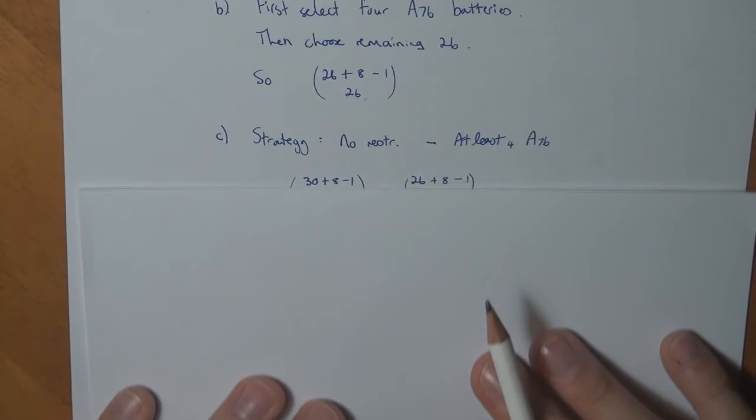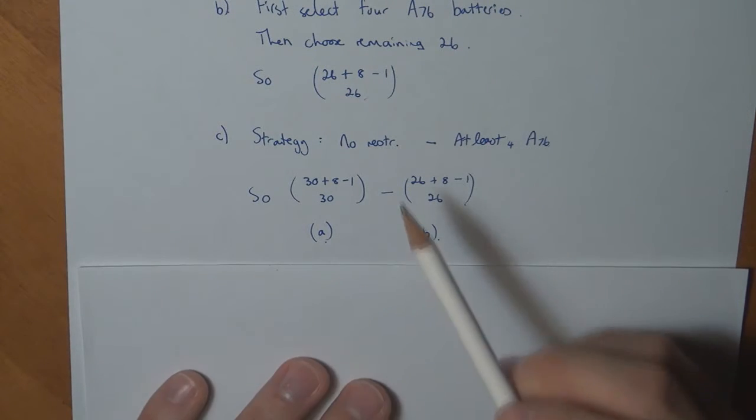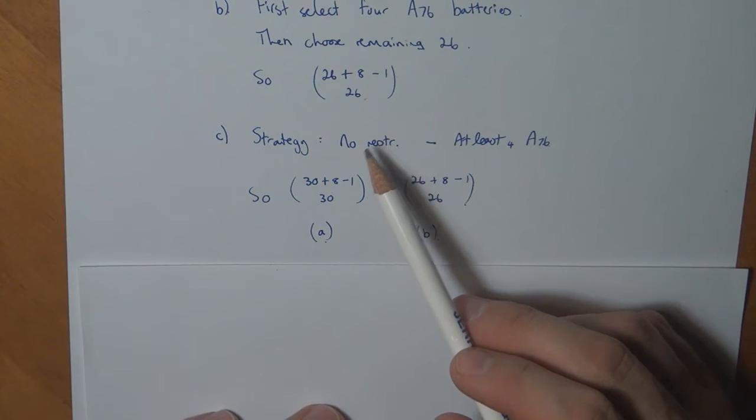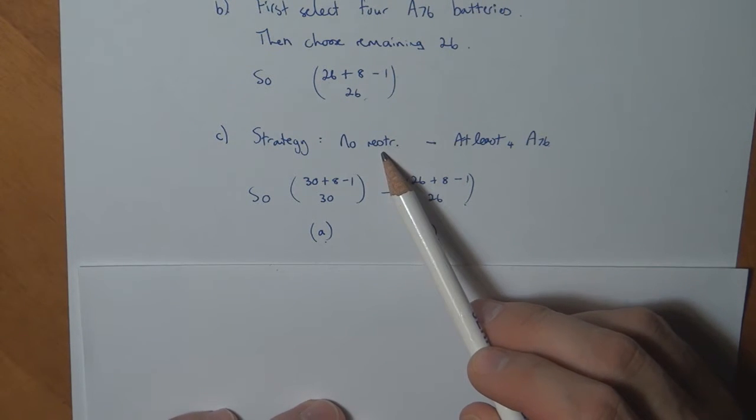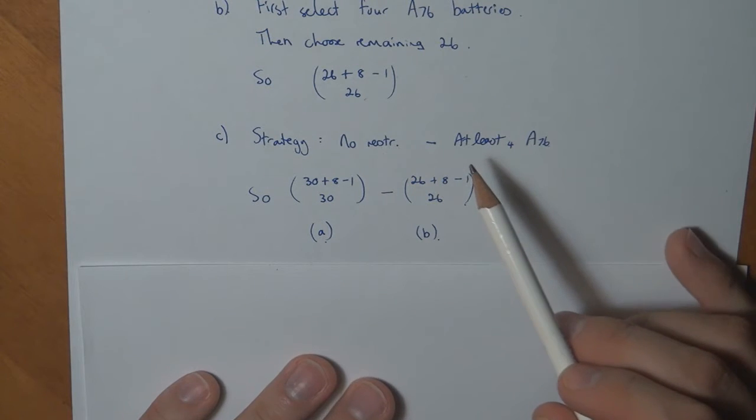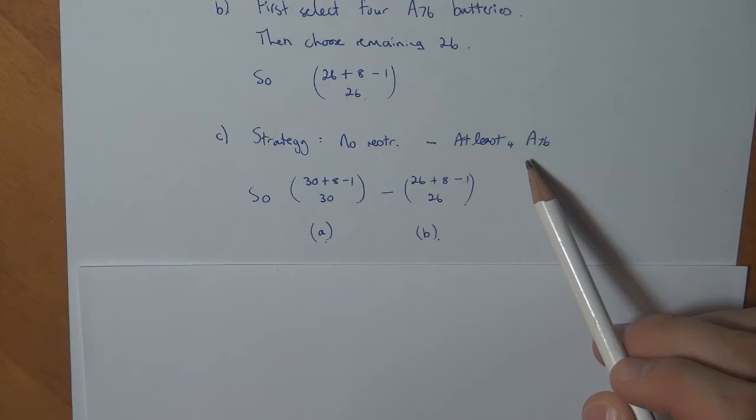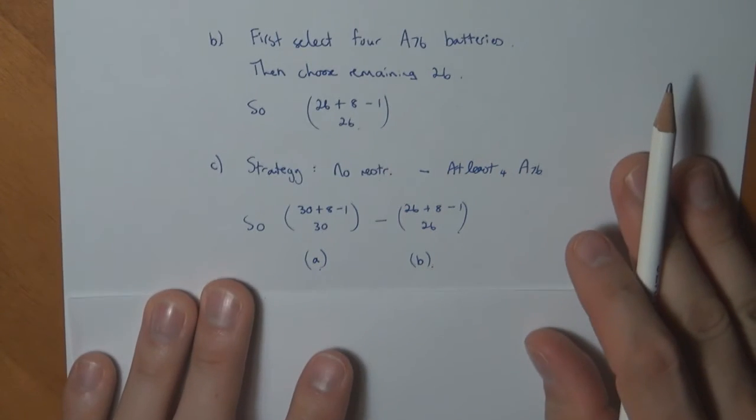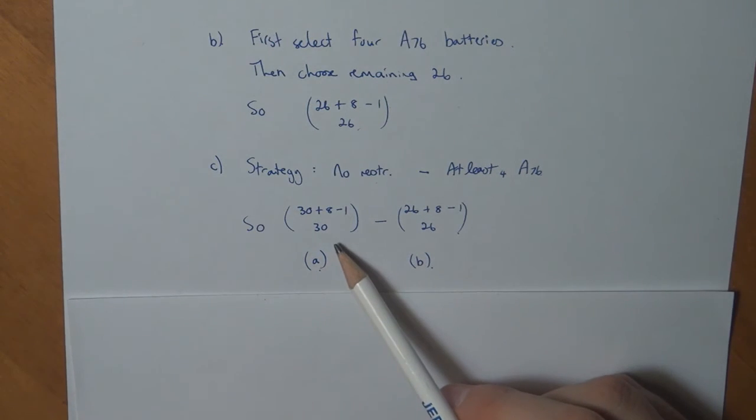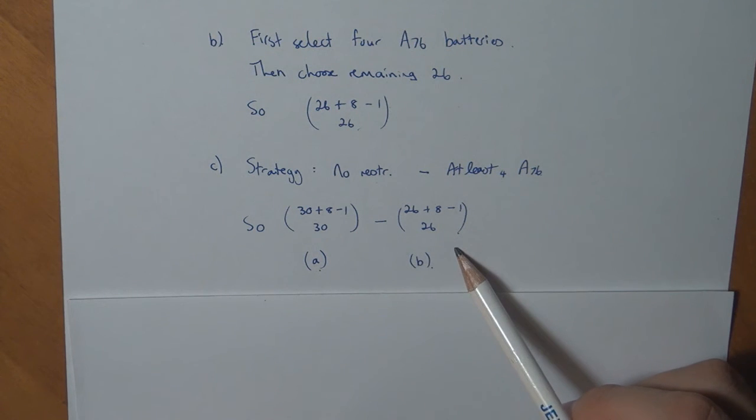In Part C, my strategy is very similar to the previous worked examples, where I take the no restriction case and subtract the situation where at least four A76 batteries are selected, which was exactly what we did in Part B. So therefore, I have the answer of A minus the answer of B.